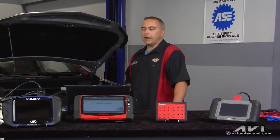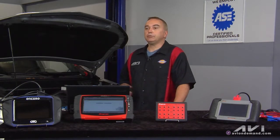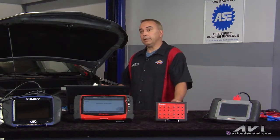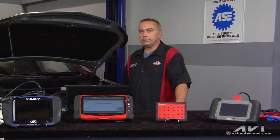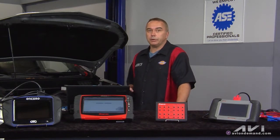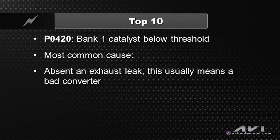Out of the top 10 trouble codes as rated by the state of Wisconsin for the federal EPA that tracks all these things for reasons for emissions failures, one of the most common ones that gives mechanics a lot of hard time in trying to diagnose is a P0420 code. P0420 code means bank one catalyst below threshold.